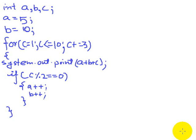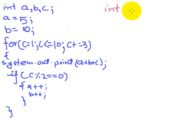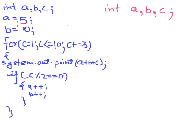So let us try to solve the question here. We have three variables, so we shall be declaring these variables as they are. We have three variables a, b, and c, and all the variables are of data type integer. Here, 5 is being assigned to a, so we shall write a equals to 5. And 10 is being assigned to b, so we shall write b equals to 10.